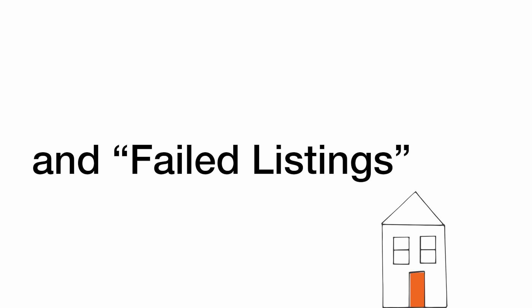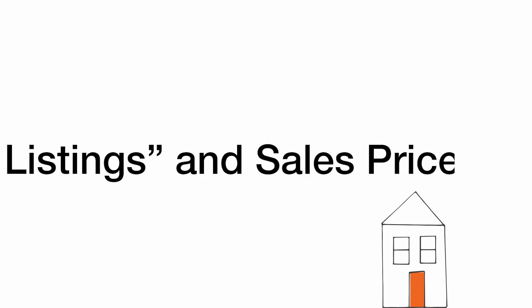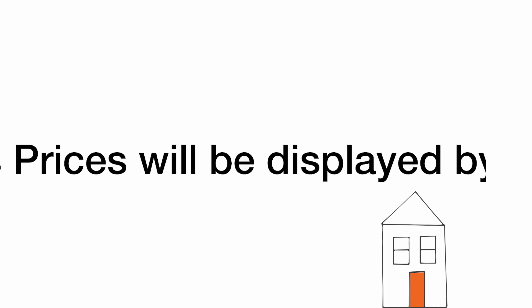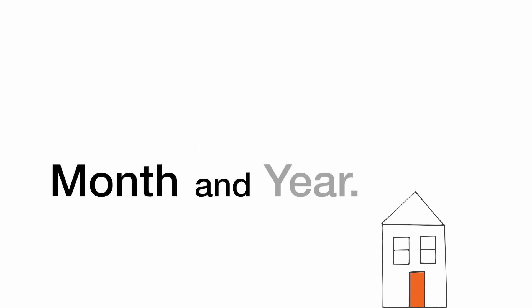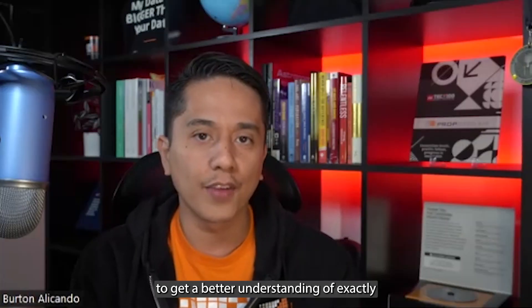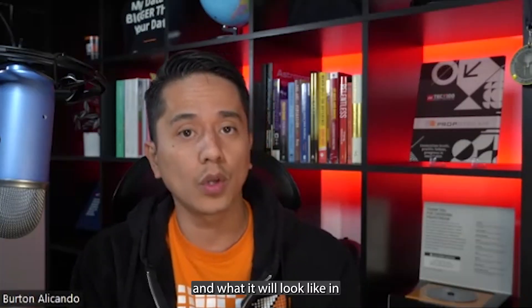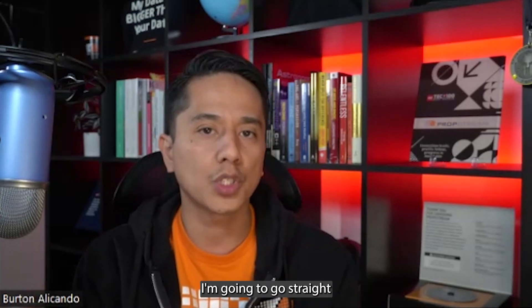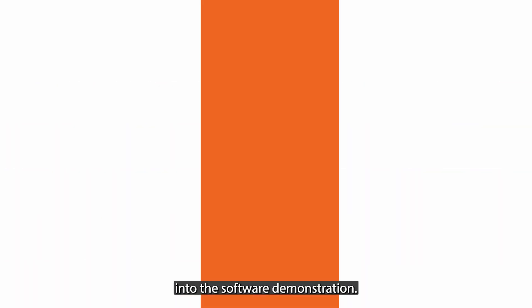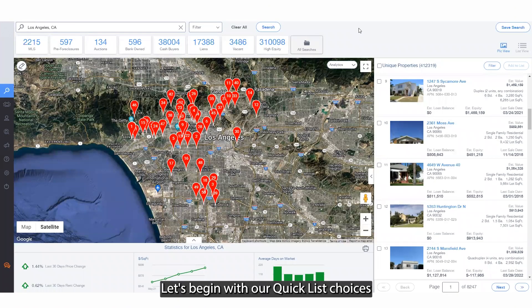Additionally, failed listings and quick lists will return, and failed listings and sell prices will be displayed by month and year. To get a better understanding of exactly what we've added and what it will look like in PropStream, I'm going to go straight into the software demonstration. Let's begin with our quick list choices located in our search filter.